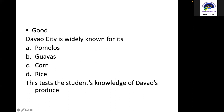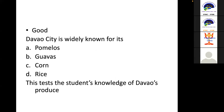A good version would be: 'Davao City is widely known for its — pomelos, guavas, corn, rice.' All alternatives are agricultural produce, so they are homogeneous. The test is measuring students' knowledge of Davao's produce. When making test questions, identify what you want students to know — for example, about PTSD — and make sure the alternatives are quite similar to each other.